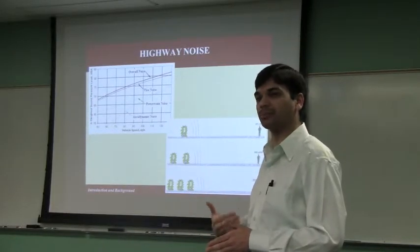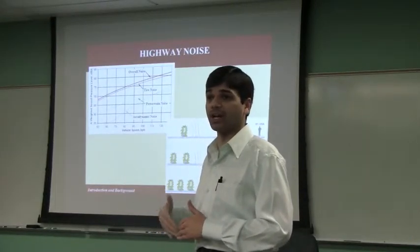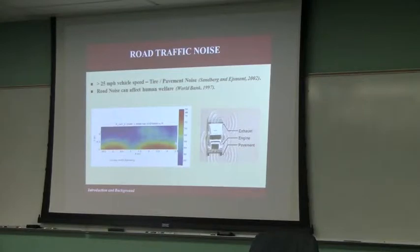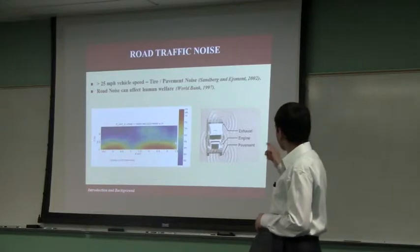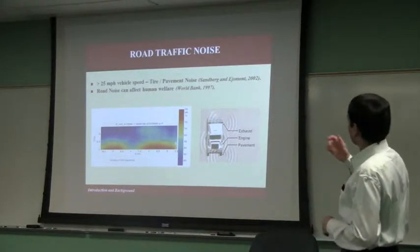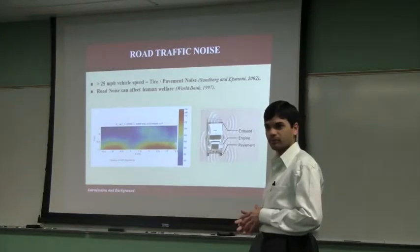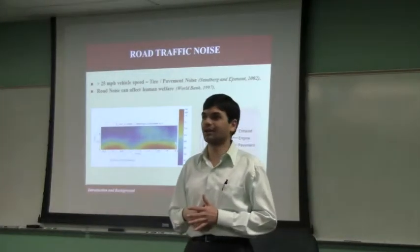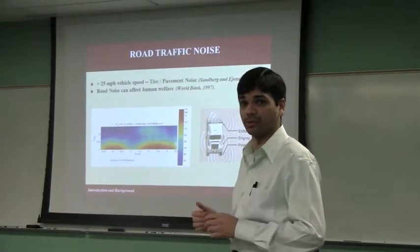We now also have something called OBSI — the onboard sound intensity — which is still A-weighted, but the values can vary all the way from 90 to about 110. There are three different noise sources: one is the pavement, the other is the engine and exhaust. The picture here represents that tire pavement interaction noise is the main contributor to overall noise. Tire pavement noise characteristics are mainly pronounced at speeds higher than 25 miles per hour. Road noise has affected human welfare in terms of children's growth — children don't sleep during nights when closer to freeways.